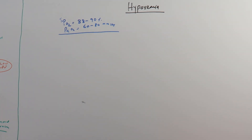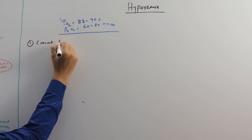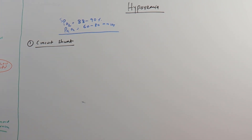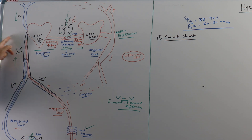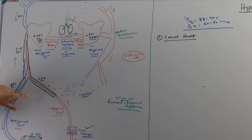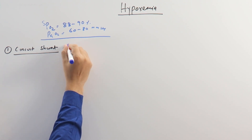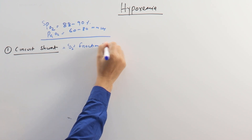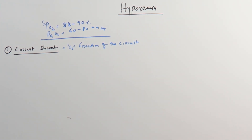When there is development of hypoxemia in our patient, the number one thing that can produce it is called circuit shunt. From this diagram, some amount of blood coming to the ECMO circuit and some amount of blood is going away from the ECMO circuit via the diseased lung — that is called the circuit shunt. The more the circuit shunt, the more blood goes through the diseased lung, and the more the hypoxemia. This is also called the oxygen fraction of the circuit. We have to ensure that the majority of blood goes through the ECMO circuit where it can be oxygenated.